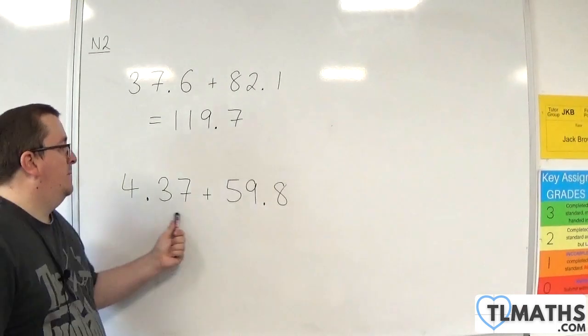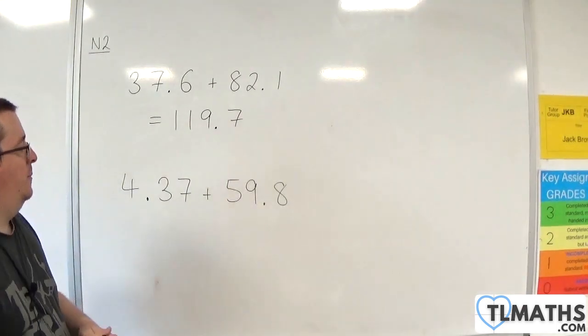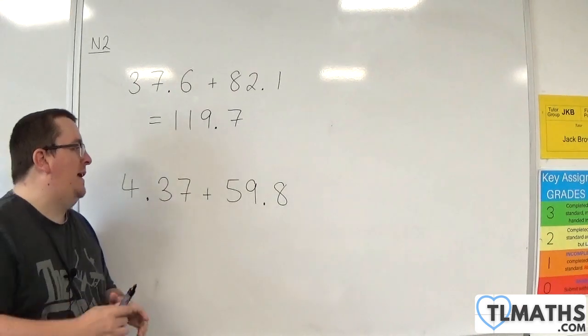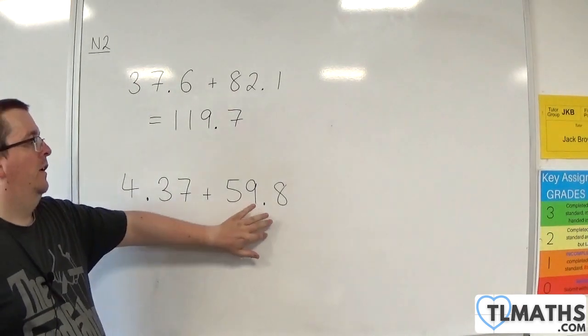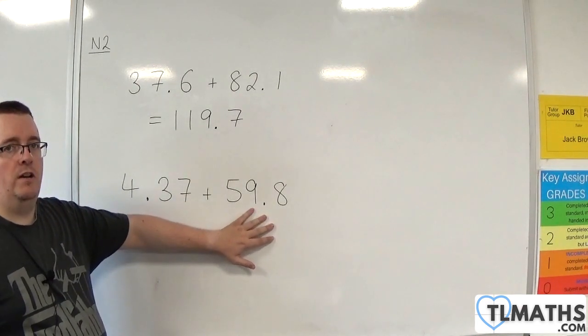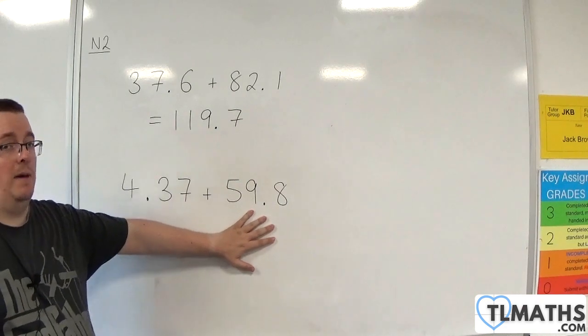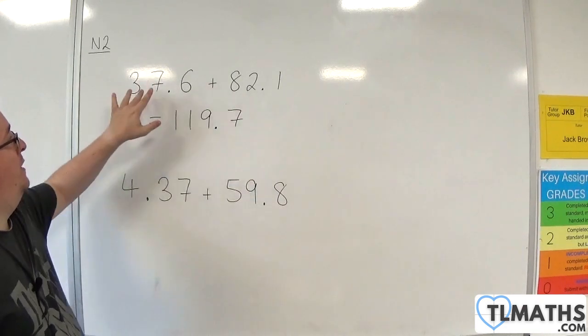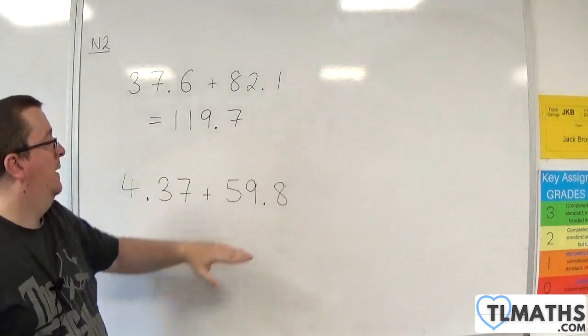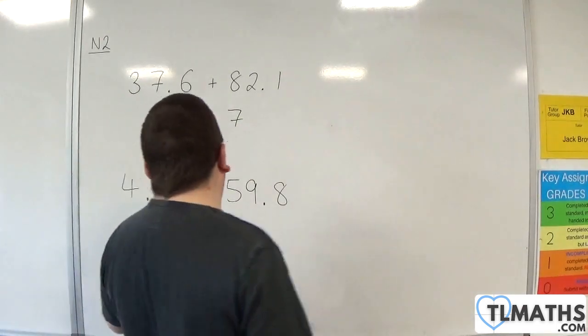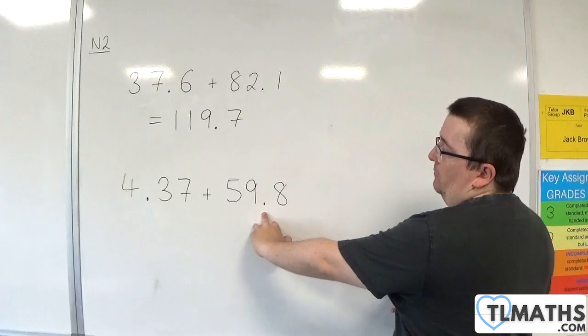Again, you need to make sure your decimal points line up. Now, generally I usually put the larger number on top. It doesn't matter. You could see from this example, I did 37.6 at the top, then 82.1, so you could do that one on top, that one on the bottom. That is really up to you.